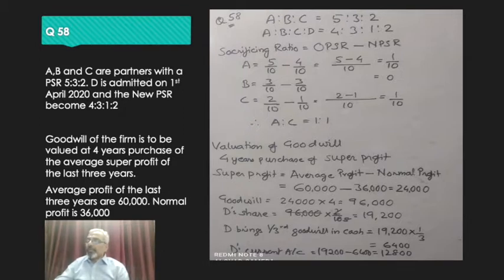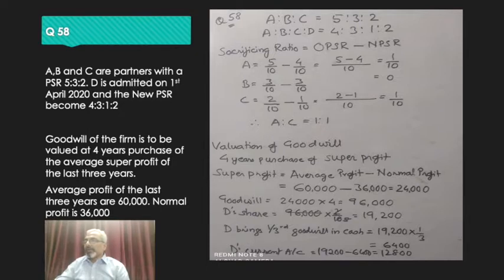If you see very carefully, 5+3+2 is 10, so the denominator in the first case is 10, and 4+3+1+2 is also 10, so the denominator of the new ratio is also 10. A's old ratio is 5/10 and the new ratio is 4/10, therefore the sacrifice is 1/10.